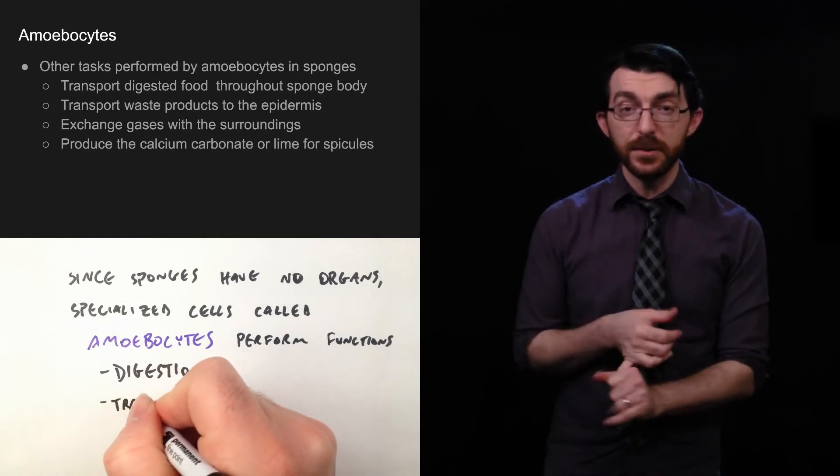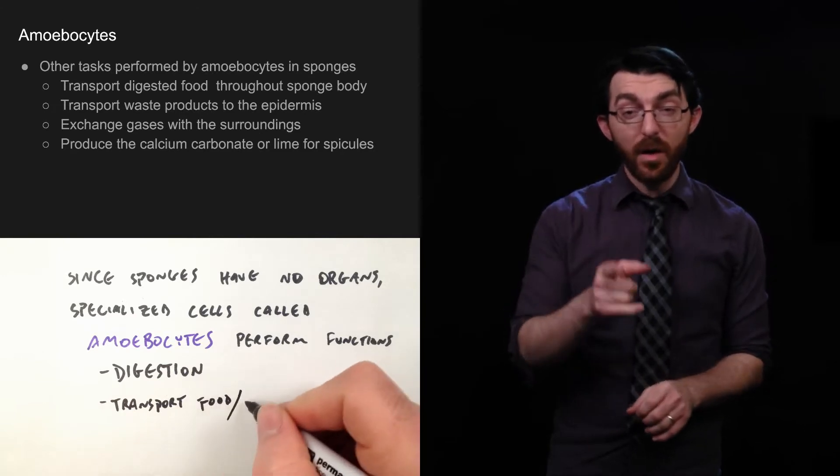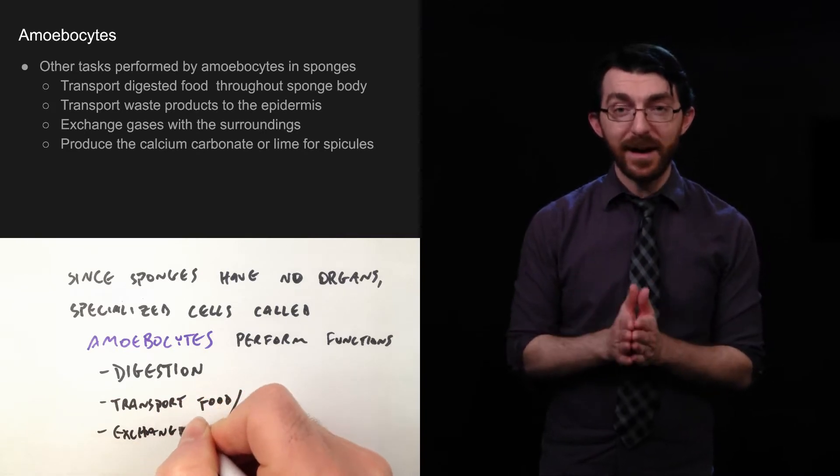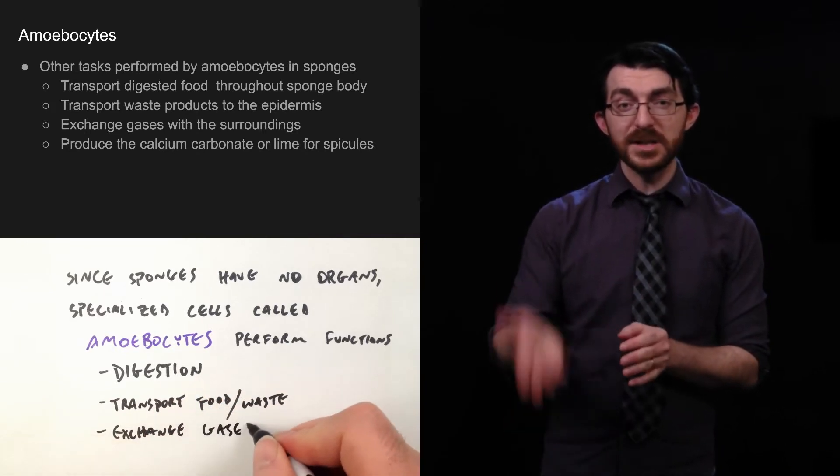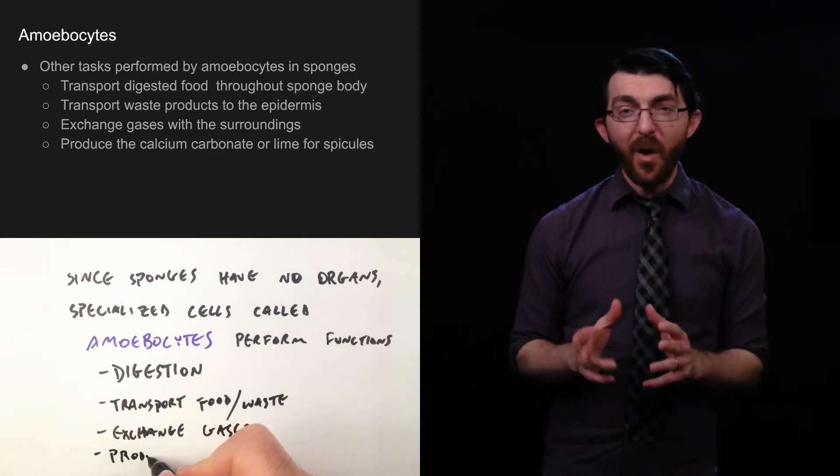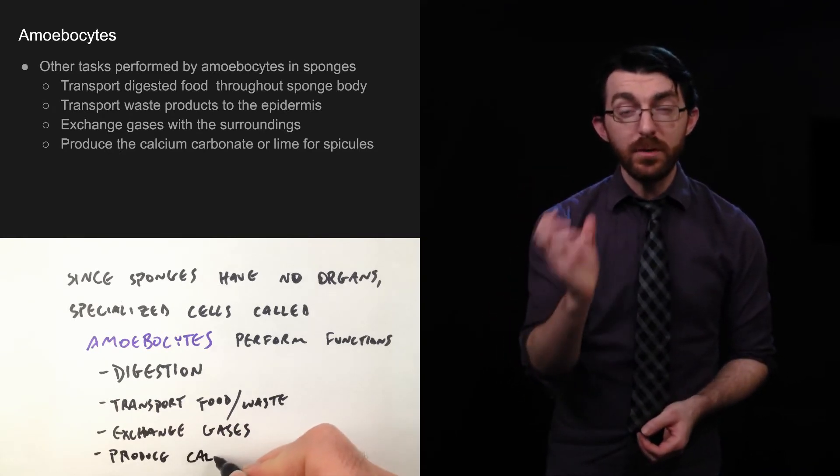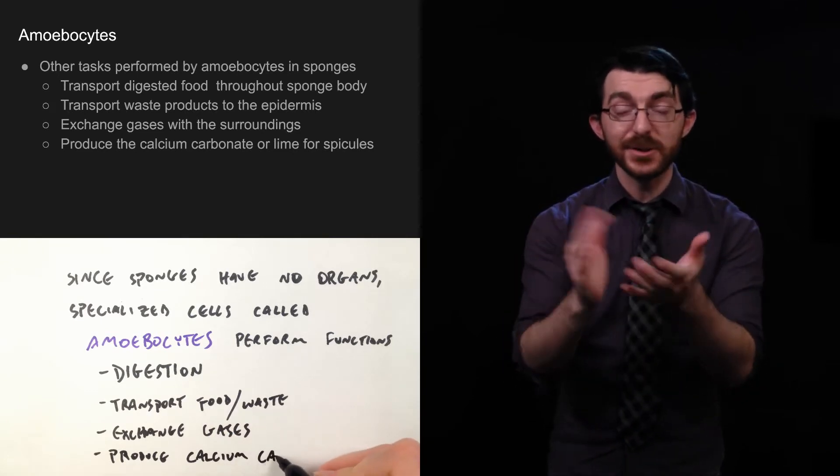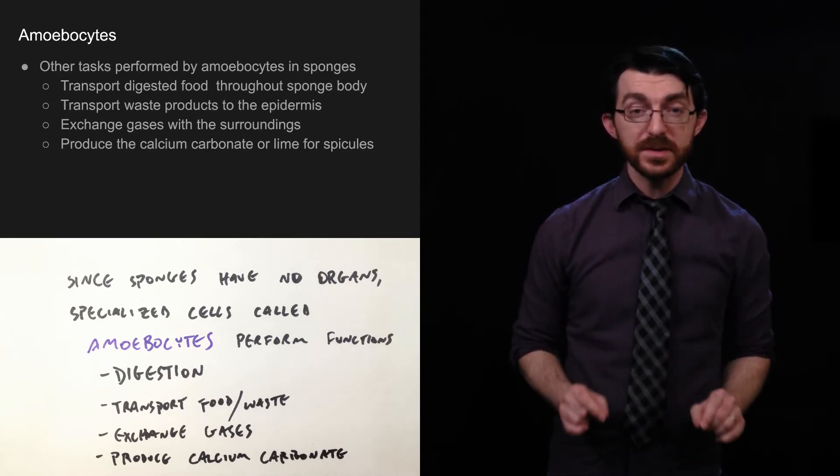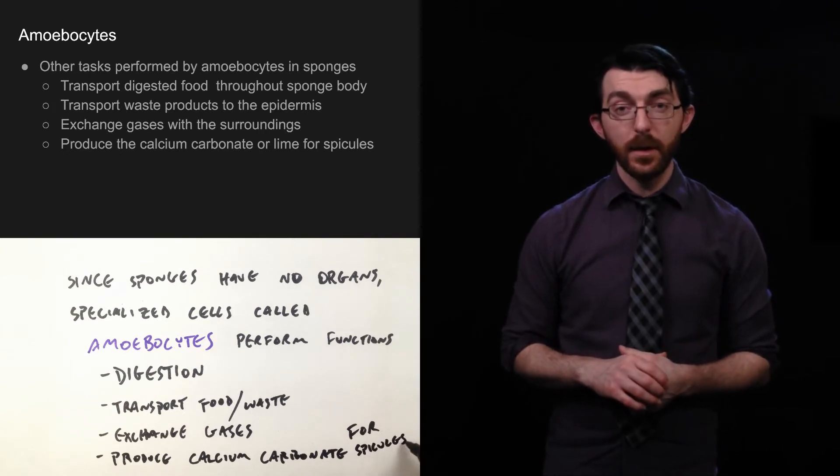There are some other tasks that they do. For example, they transport digested food. They transport waste products. They exchange gases. By the way, those are all things that your blood does. These are necessary bodily functions for any animal to digest food, to get rid of waste, to exchange gases. All that we're going to be learning for the rest of the year is how different kinds of creatures do these necessary tasks. They're all essential services, so to speak. And the last thing that they're specialized for is to produce the calcium carbonate, or lime is another name for that, for spicules.